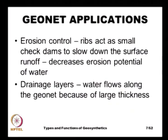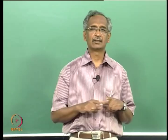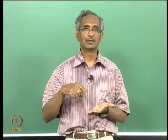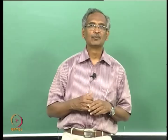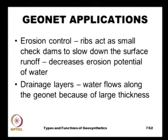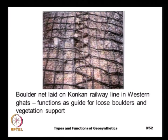Geonets can also be used as excellent drainage layers, because of their thickness. The soil in between the small diamond-shaped openings is not very highly compacted, so there is a flow path for water to flow through the geonet. Here is a good application: a geonet made of polymeric rope called a boulder net, used in the Konkan railway in the Western Ghats.